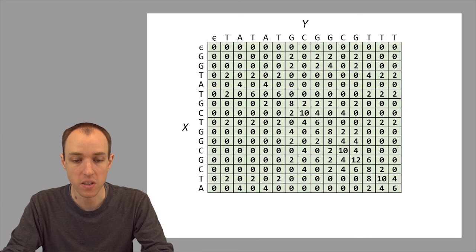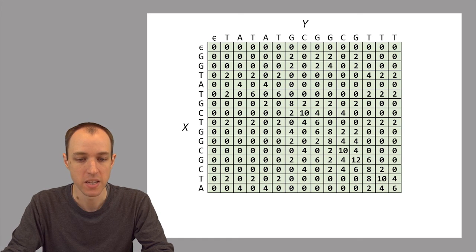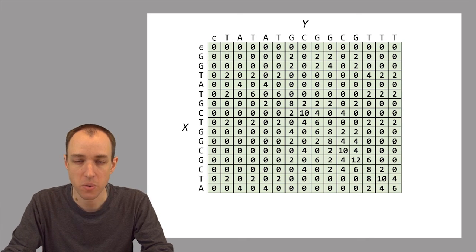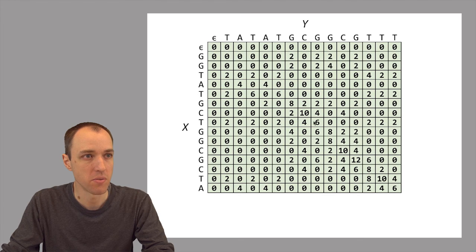So now if we use this recurrence and this scoring matrix to fill in a dynamic programming matrix, we'll get a matrix that looks like this. And you'll notice immediately that many of the elements are zero. So intuitively, this is because the goal of local alignment is to find parts of x and y that match closely enough that they sort of pop out from the background of zeros, from the background of dissimilarities. And so you'll see, for example, here the values that are non-zero are mostly over here, sort of in this region here.